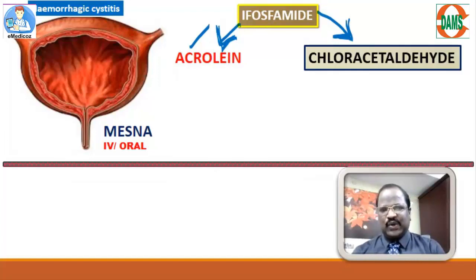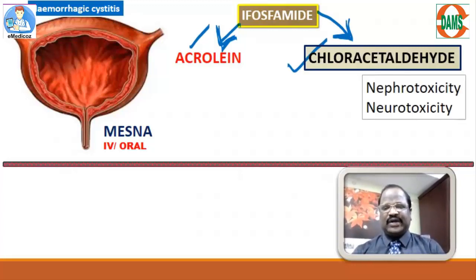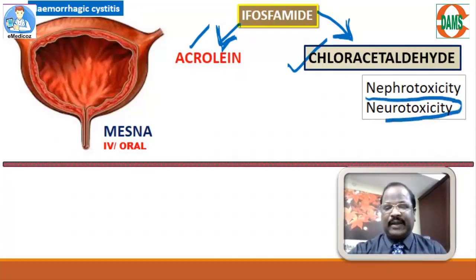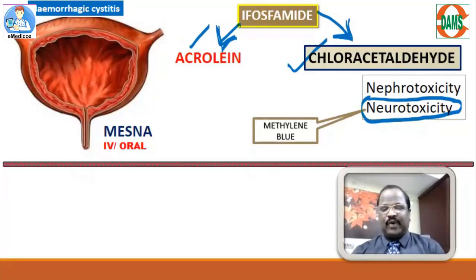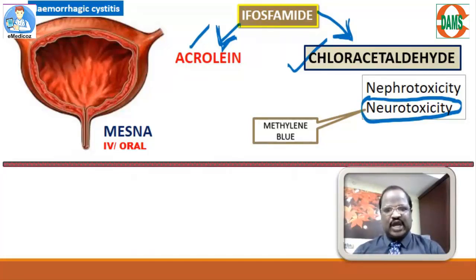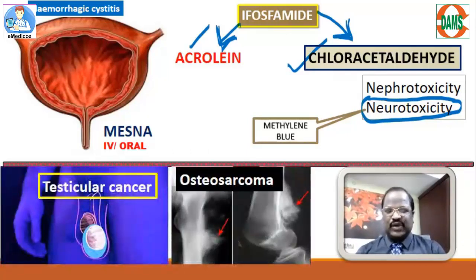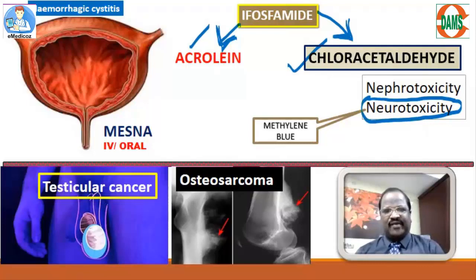Mesna is the antidote for both cyclophosphamide and ifosfamide. Ifosfamide also produces chloroacetaldehyde causing neurotoxicity and nephrotoxicity. The neurotoxicity can be minimized by using methylene blue. Comparing to cyclophosphamide, ifosfamide causes more hemorrhagic cystitis and more neurotoxicity due to metabolite accumulation. Ifosfamide is useful for treatment of testicular cancer and osteosarcoma.